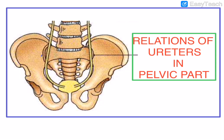Welcome back, dear viewers and students. In the previous session we discussed the relations of the ureters in the abdominal part. In the abdominal part we did not find any changes in males and females, but we observed some changes present on the left side and the right side of the ureters.